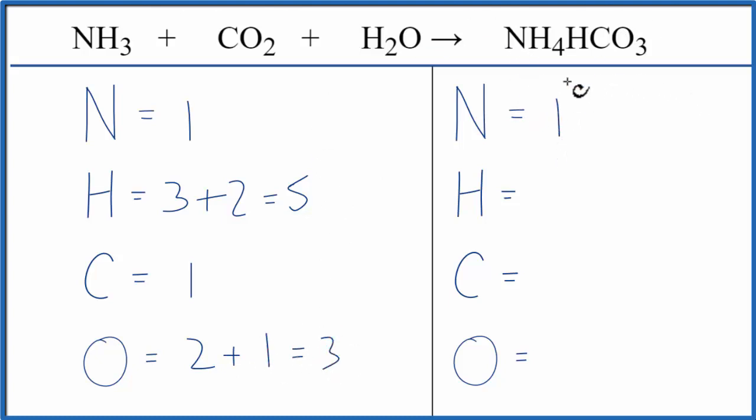On the product side, we have one nitrogen, and then hydrogens, we have the four plus the one in this polyatomic ion here. So we have five hydrogens. Carbons, we have one. Oxygens, we have three.